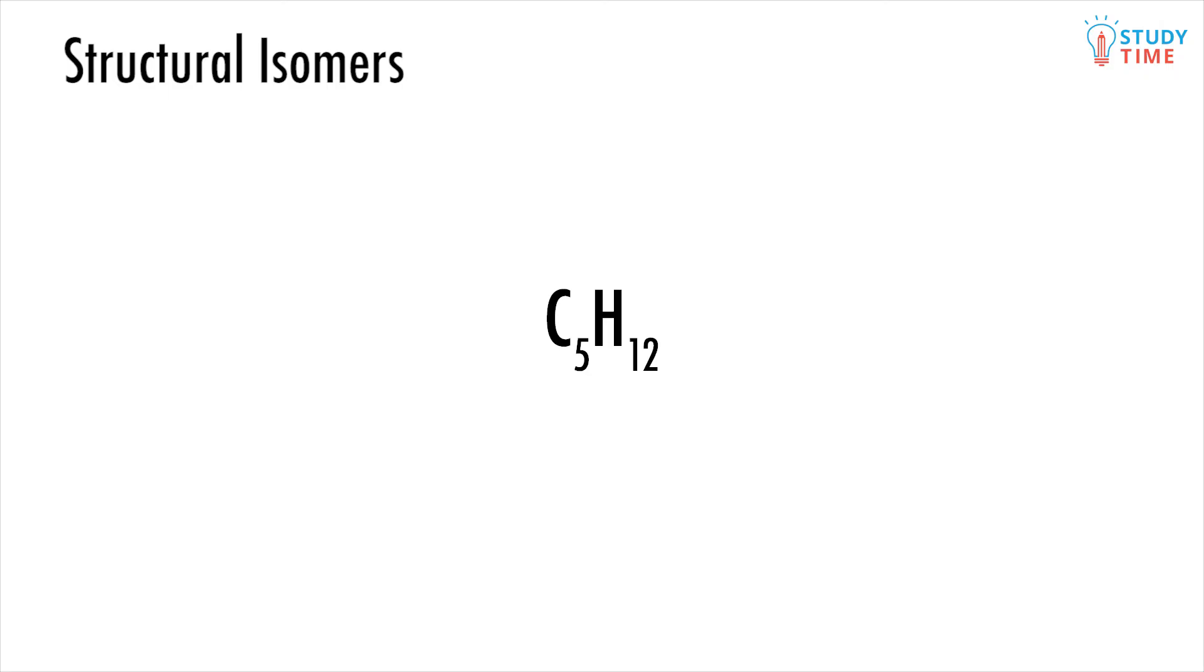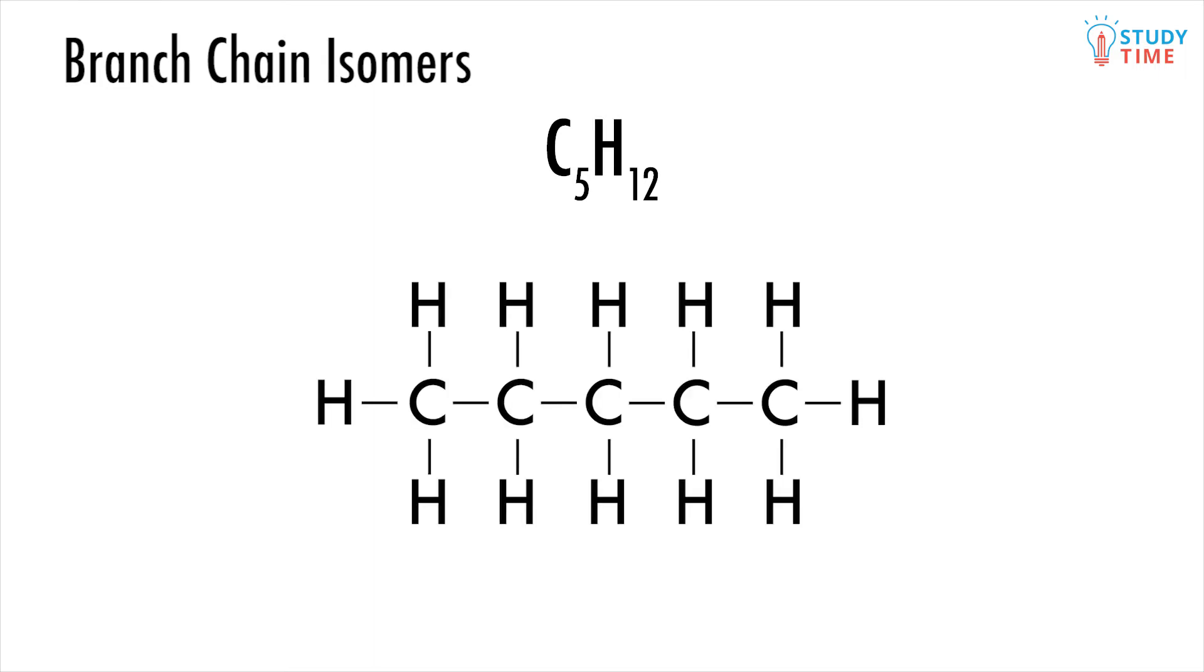The first kind of structural isomerism is branched-chain isomerism. Imagine you're given the molecular formula C5H12. What possible molecules could this be? Well you can start by drawing out the simplest version you can imagine. Start with a 5-carbon chain alkane and check that the number of hydrogens makes sense.